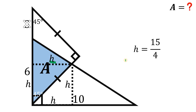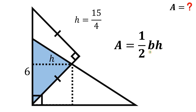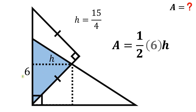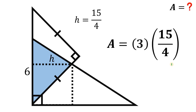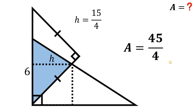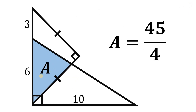Going back to our figure, we now know h, and that's all we need. The area of this triangle is one half times base times height. The base is 6 and the height is 15 over 4. Simplifying: one half times 6 is 3, and 3 times 15 over 4 gives 45 over 4. Therefore, the area of the region represented as A is 45 over 4 square units. And as always, we are done.